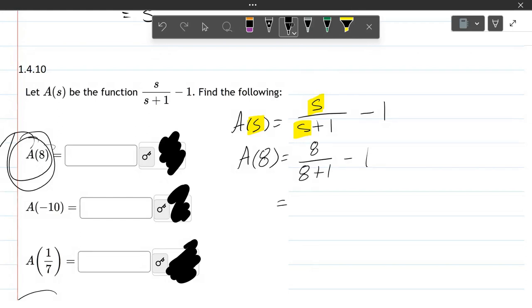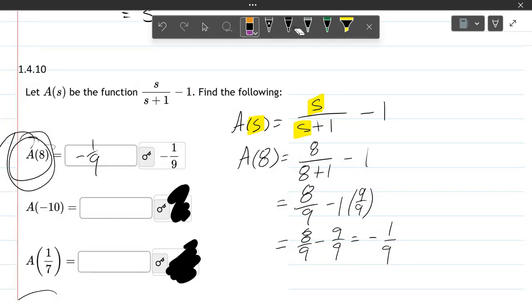Now I'm going to simplify. We're technically done here but I'm going to simplify. 8 plus 1 is 9 minus 1. Now I want to subtract fractions so I need common denominators so I multiply 1 by 9 over 9. So it's 8 ninths minus 9 ninths which is negative 1 ninth. And that's exactly what we have there.